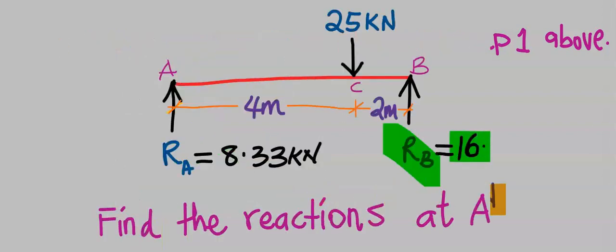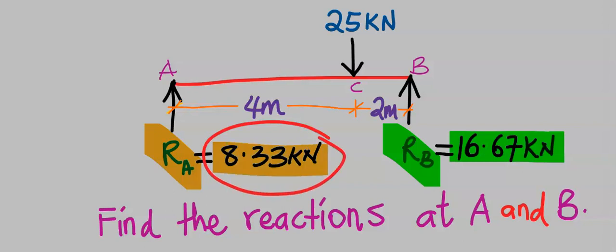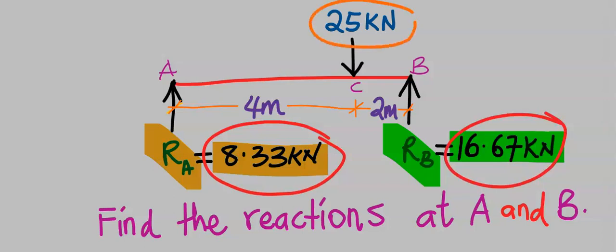We have obtained R subscript B and now we have the value of R subscript A. If you add the forces going up, it should be equal to the forces coming down — this confirms our answer.